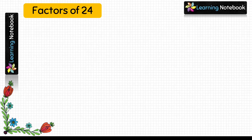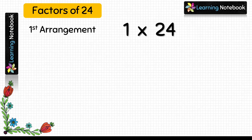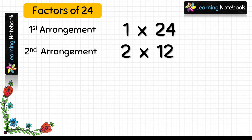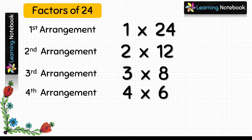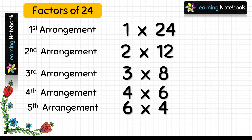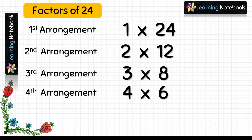So now we have got five arrangements. First arrangement is 1 into 24, second is 2 into 12, third is 3 into 8, fourth is 4 into 6, and last one is 6 into 4. But we have already covered it as 4 into 6, so we will not consider this fifth arrangement.